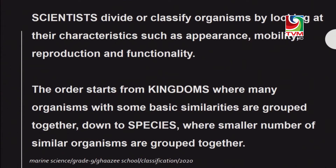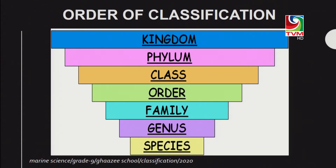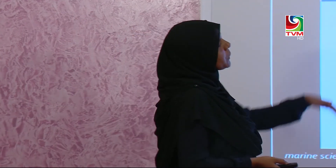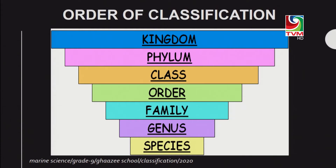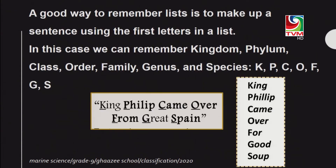Species contains very few organisms under the same classification. The order of classification always starts with kingdom, then phylum, class, order, family, genus, and finally species. You cannot rearrange this order — it should always be the same, always starting from kingdom and ending with species.